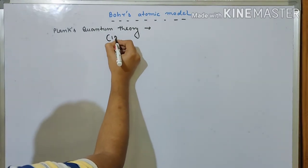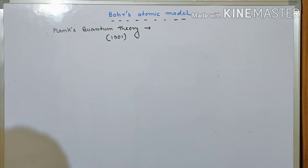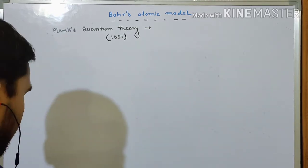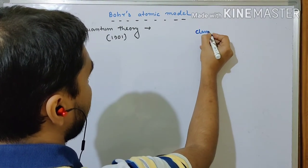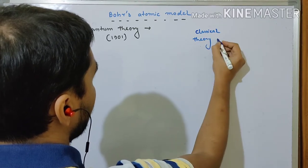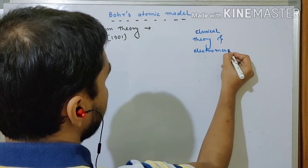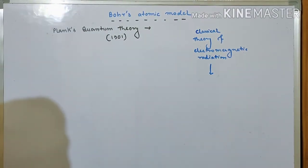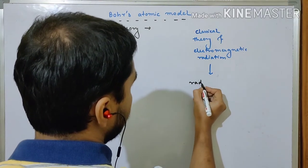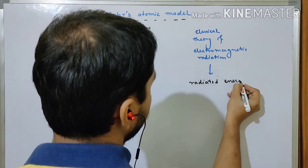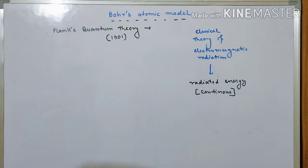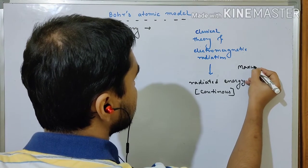We need to understand the time — it is 1901 — that means it came before Bohr's atomic model. The reason for Planck's quantum theory was the failure of the classical electromagnetic theory of radiation. According to the classical theory of electromagnetic radiation, it suggests that radiated energy is continuous. That means energy, when it is radiated, must be happening in a continuous manner. That is Maxwell's theory.